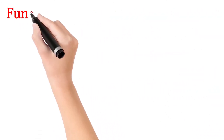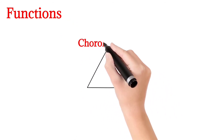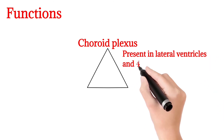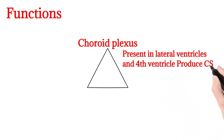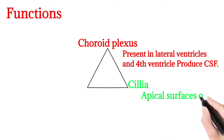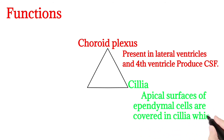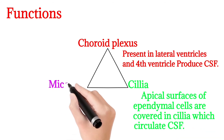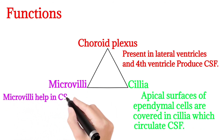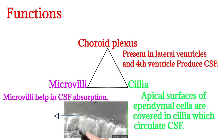The functions of ependymal cells include: choroid plexuses, present in the lateral ventricle and fourth ventricle, which produce CSF; cilia on the apical surface of ependymal cells, which circulate CSF; and microvilli, which help in CSF absorption. As shown in the figure, cilia circulate CSF.